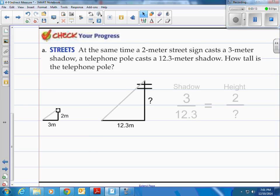Well let's do what we did this last time. Let's take the shadows and make them in ratio. So we'll take the small and relate it to the big or the sign and relate it to the telephone pole. Those are the shadows.